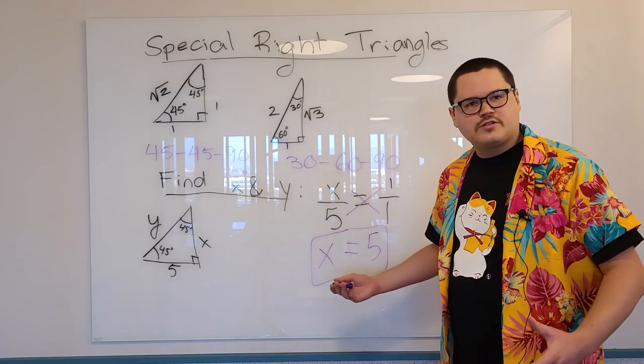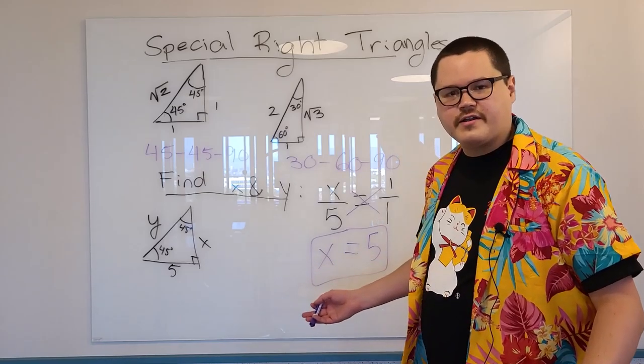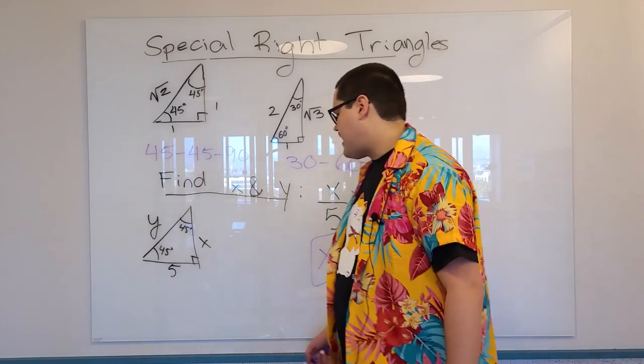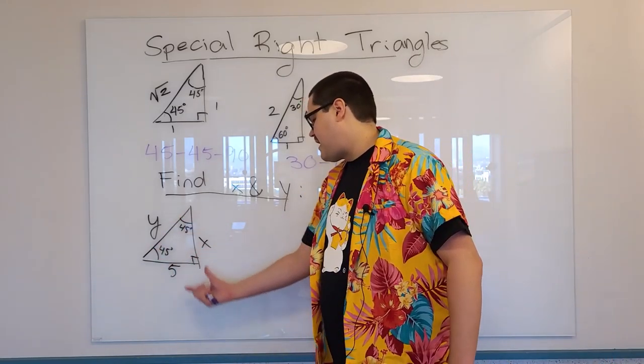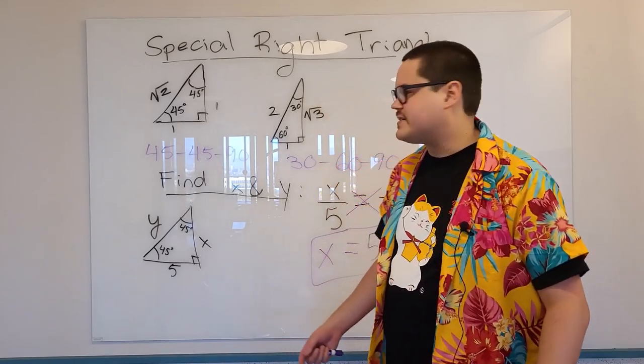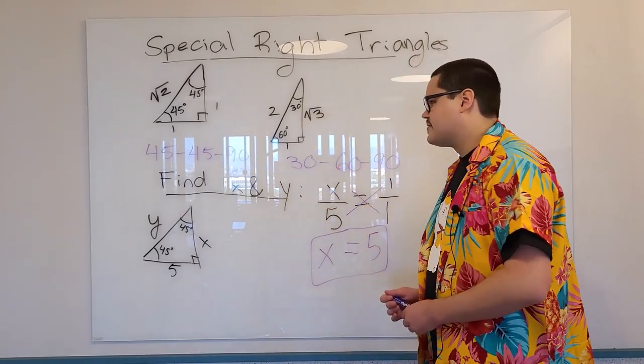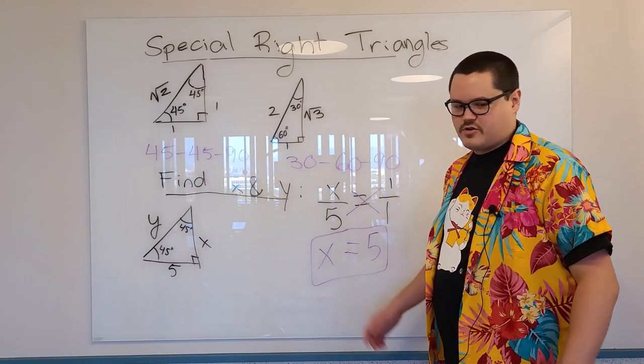Okay. This was kind of easy. You might have already known how to do it. It's kind of obvious. 45, 45. The opposite sides have to be the same. Maybe you already knew it was 5.